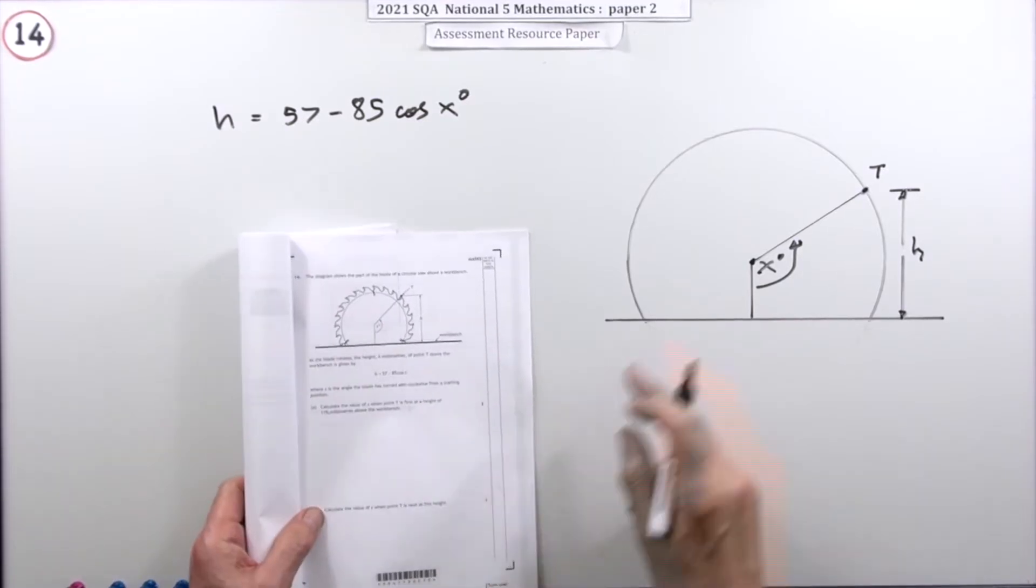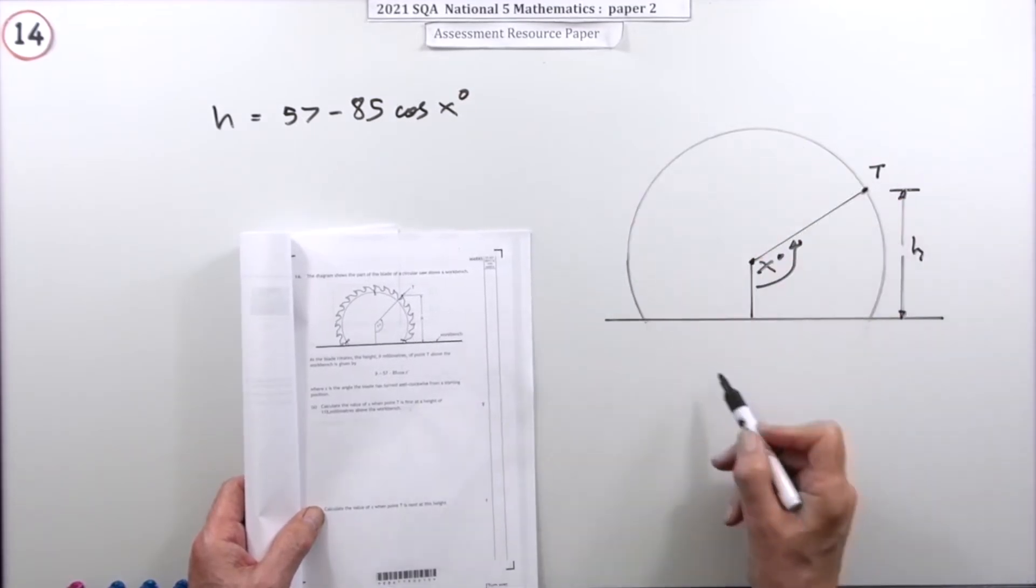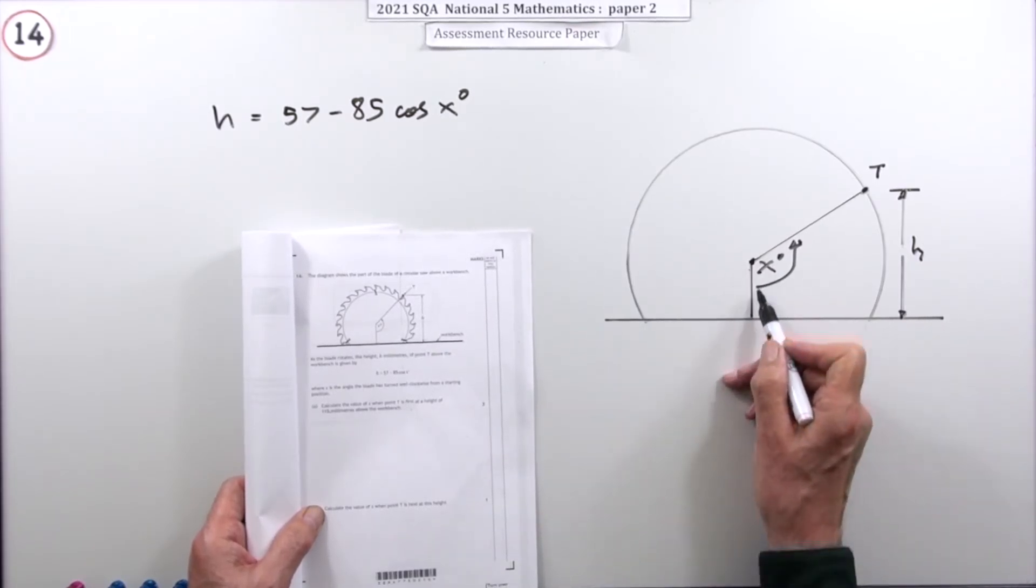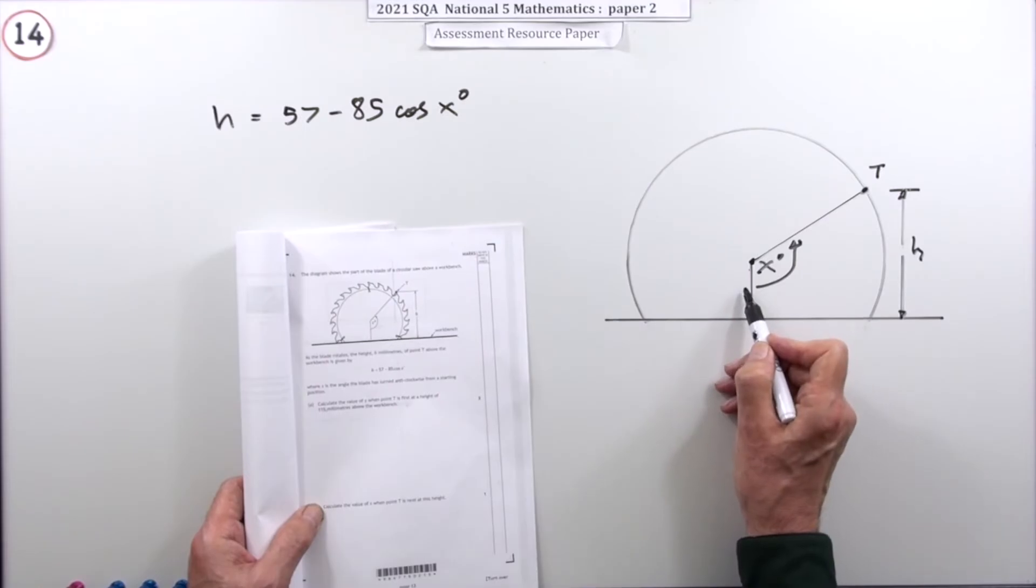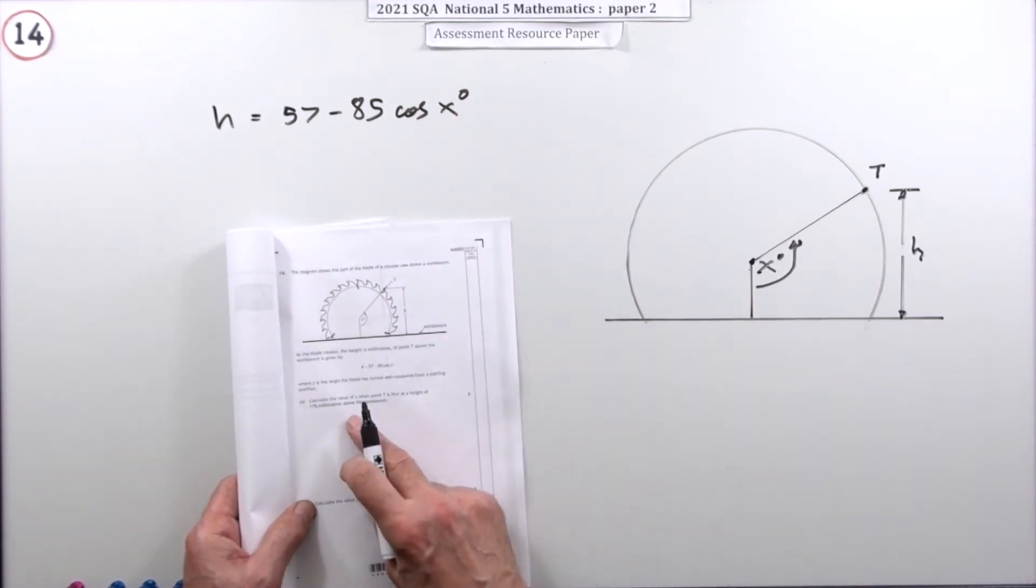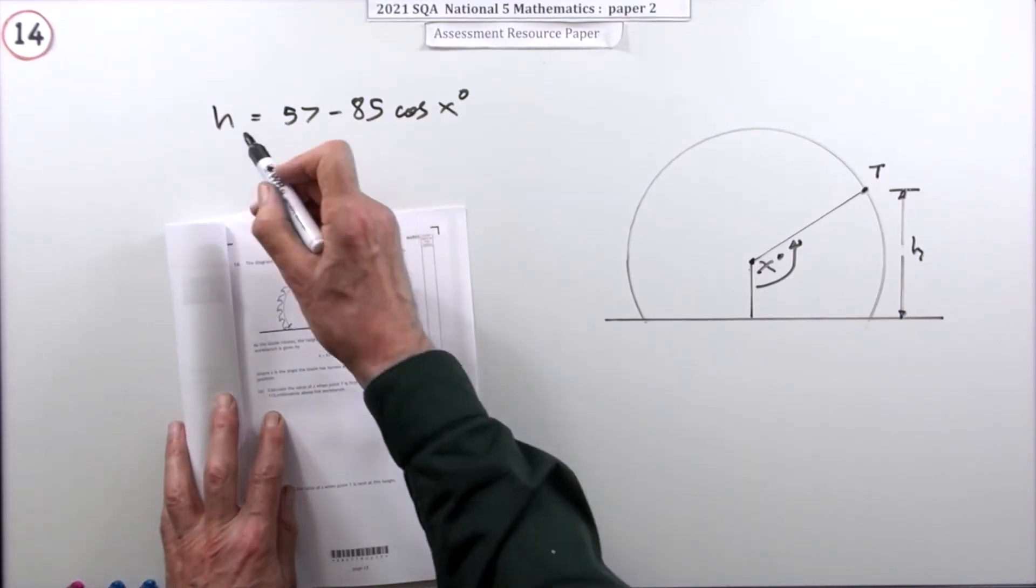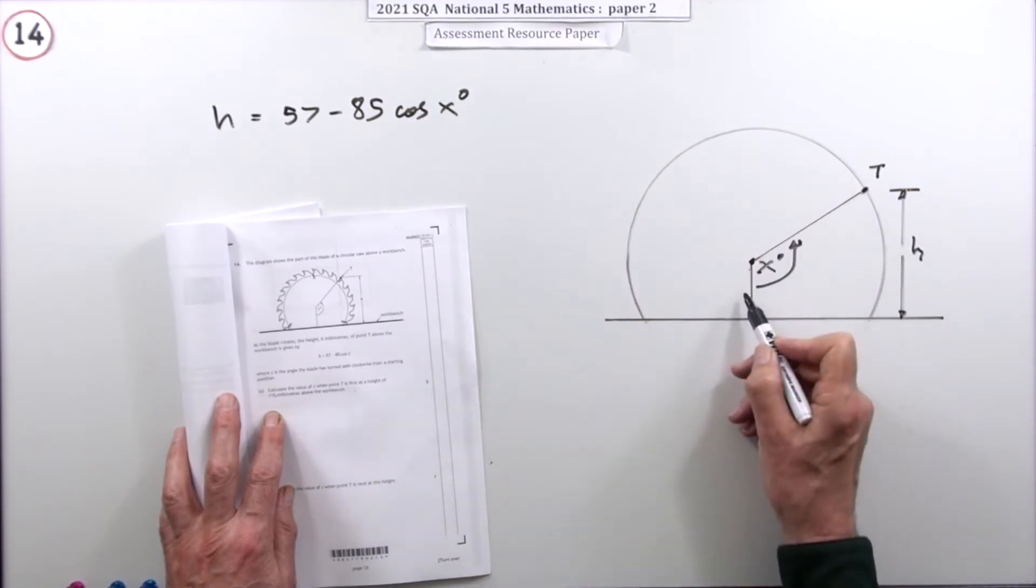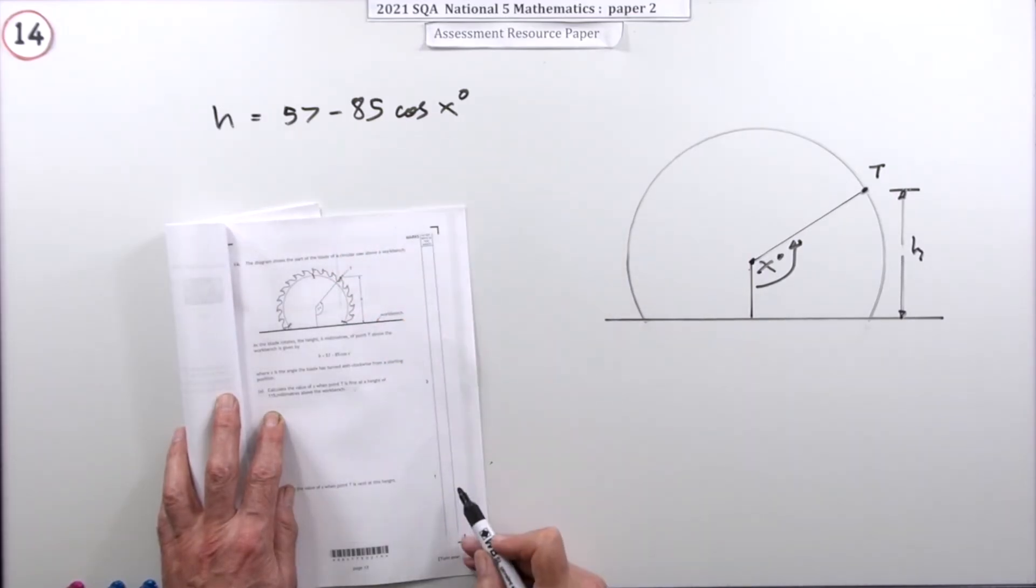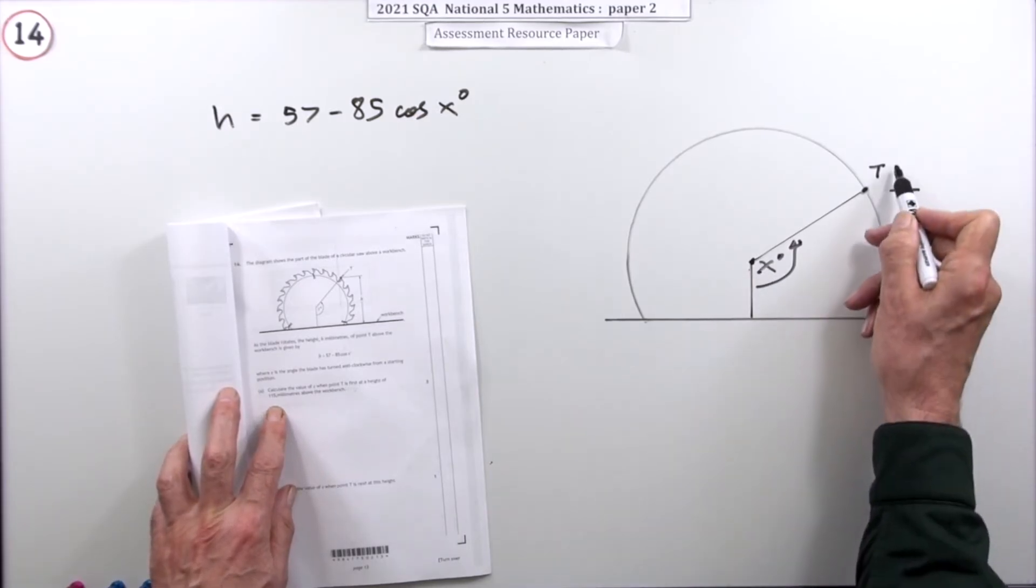Number 14 for four marks is one of those rotating circle questions where you have to find the height of some point on the circumference. The center of the circle isn't on the x-axis, so there's always a constant amount up - that must be the 57, and that 85 must be the radius. But you don't need to know that particularly because it's just a formula. All you're going to do in part A for three marks is put 115 into the formula. The height of that rotating point as x changes is given by 57 minus 85 cos x. What would the angle be when that reaches a height of 115?